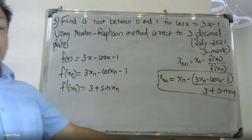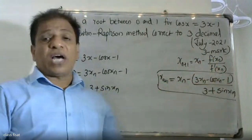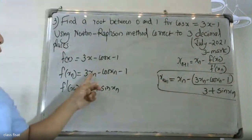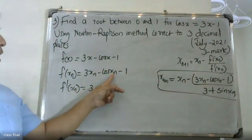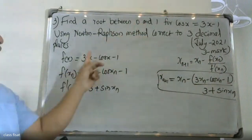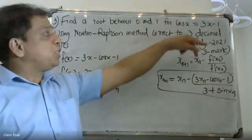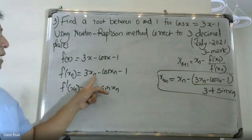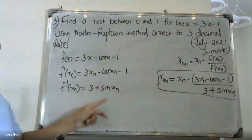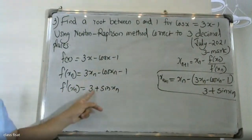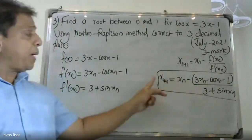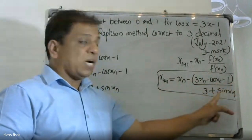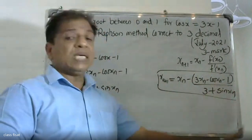So, x_{n+1} is equal to x_n minus f of x_n by f dash x_n. That is, f of x_n equals 3x_n minus cos x_n minus 1, and f dash x_n equals 3 plus sin x_n. Therefore, x_{n+1} equals x_n minus (3x_n minus cos x_n minus 1) divided by (3 plus sin x_n).